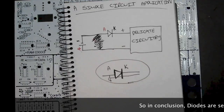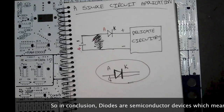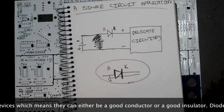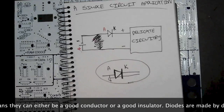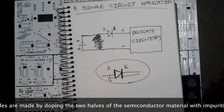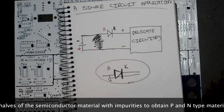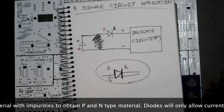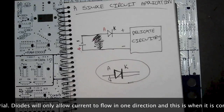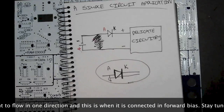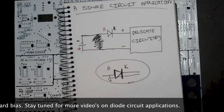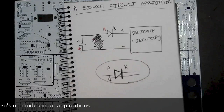In conclusion, diodes are semiconductor devices, which means they can either be a good conductor or a good insulator. Diodes are made by doping two halves of a semiconductor material with impurities to obtain P-type and N-type material. Diodes will only allow current to flow in one direction — when connected in forward bias. Stay tuned for more videos on diode circuit applications.